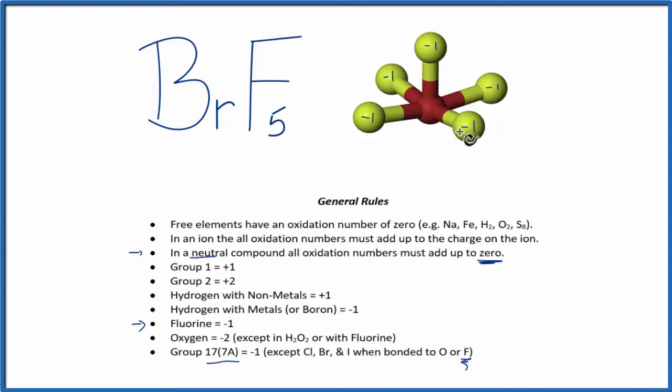So think of it this way. We have negative one, two, three, four, five. Negative five plus some number is going to equal the zero here.